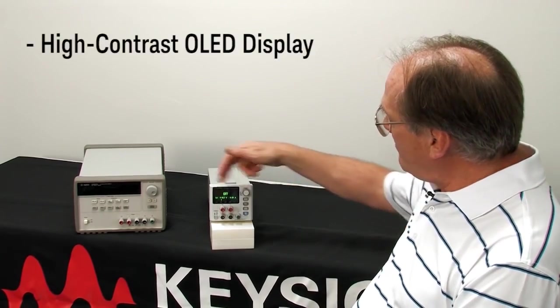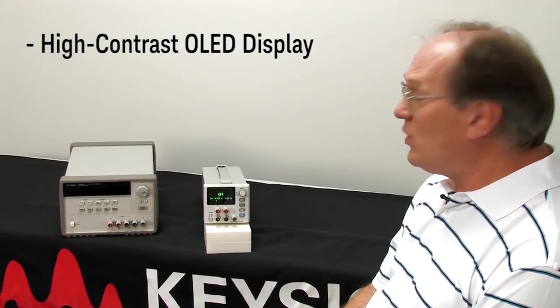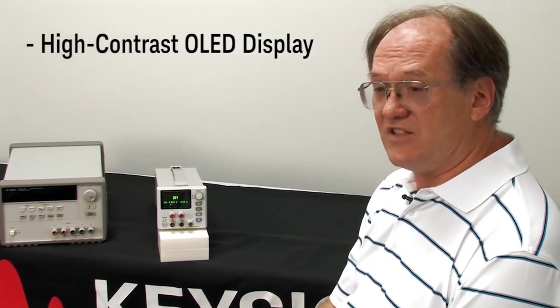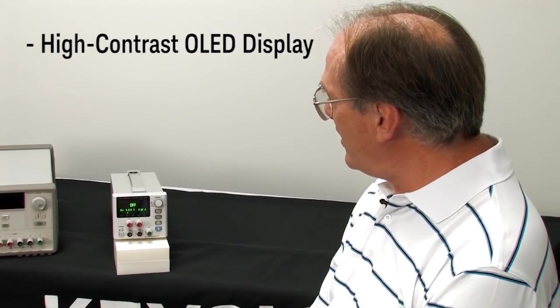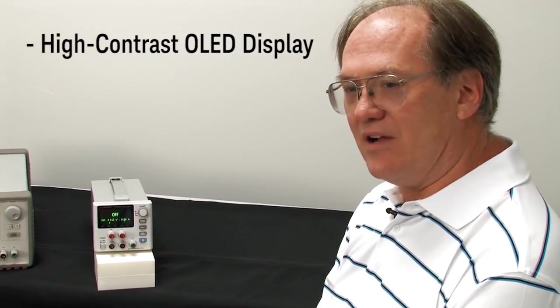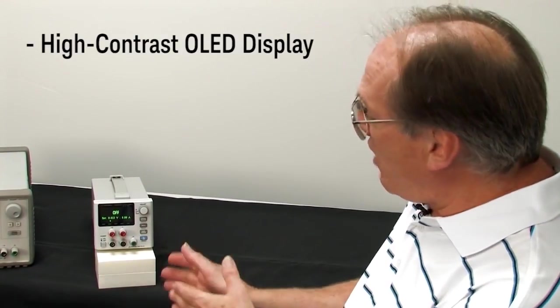To start off with, I mentioned the OLED display. OLED is the latest technology. It's available in some smartphones and other things. It gives you great viewing angles, which are really important because quite often you put your power supply far away on the side of your bench, so you can have your scope or your spectrum analyzer in the center.